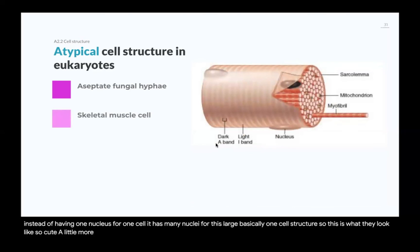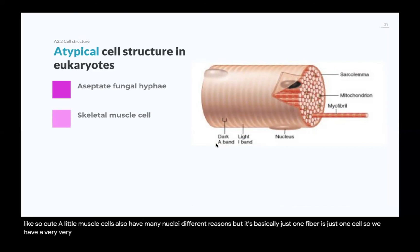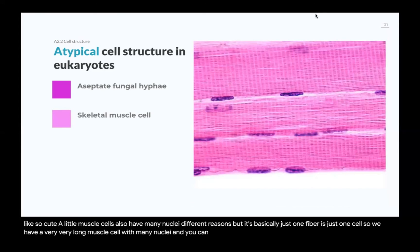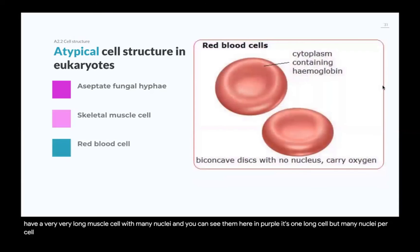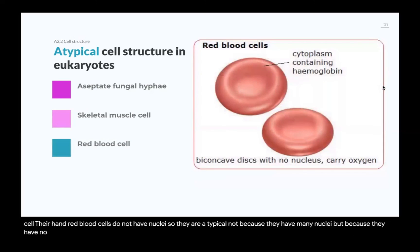Skeletal muscle cells also have many nuclei, for different reasons — it's basically just one fiber, one cell. You have a very long muscle cell with many nuclei, and you can see them here in purple: one long cell with many nuclei per cell. Red blood cells, on the other hand, do not have nuclei — they are atypical not because they have many nuclei, but because they have no nucleus.